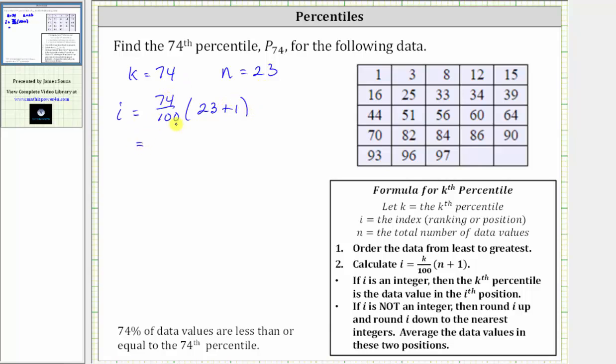Simplifying, 74 divided by 100 is equal to 0.74. 23 plus one is equal to 24, and this product is equal to 17.76. Now we know i is equal to 17.76.